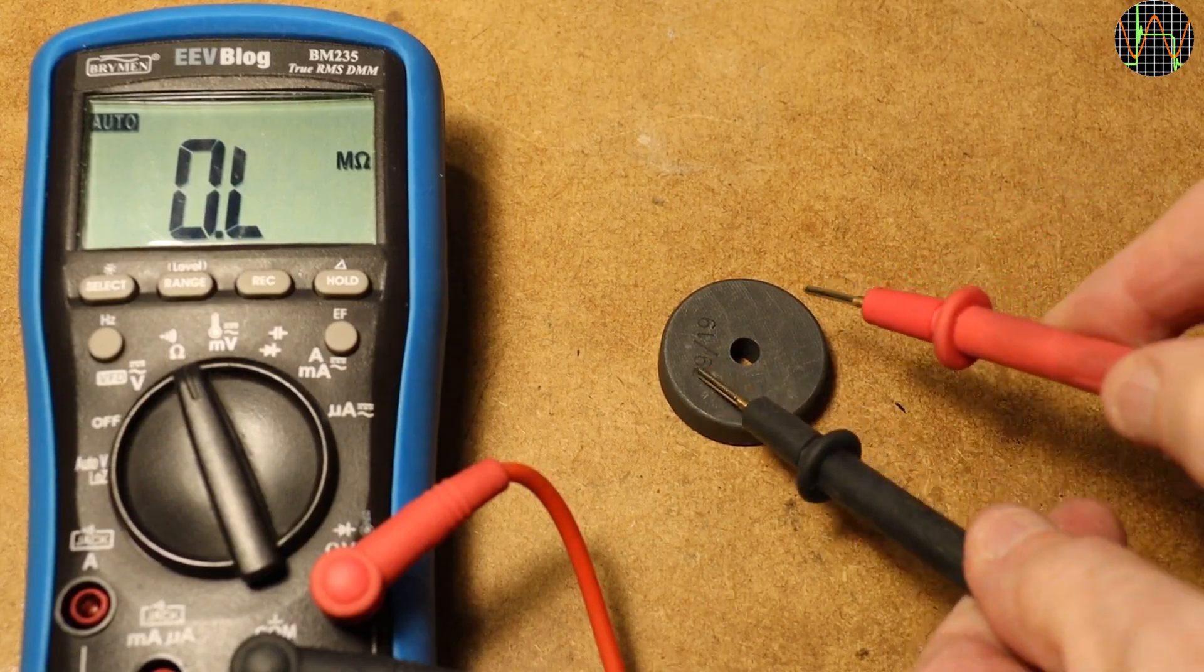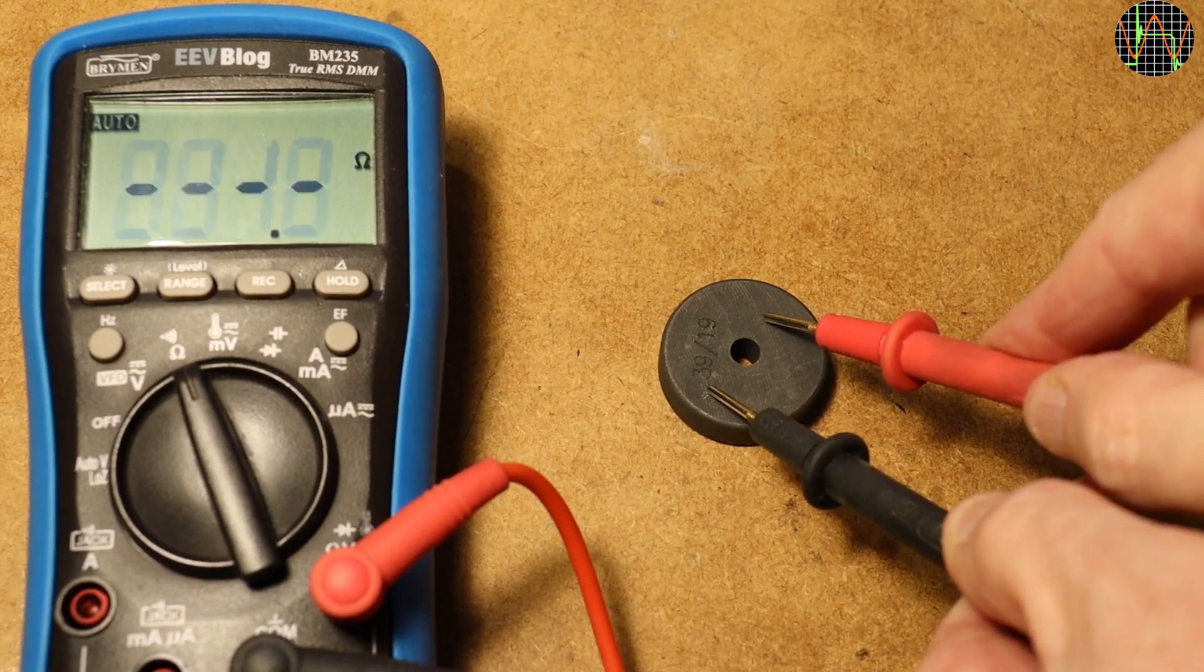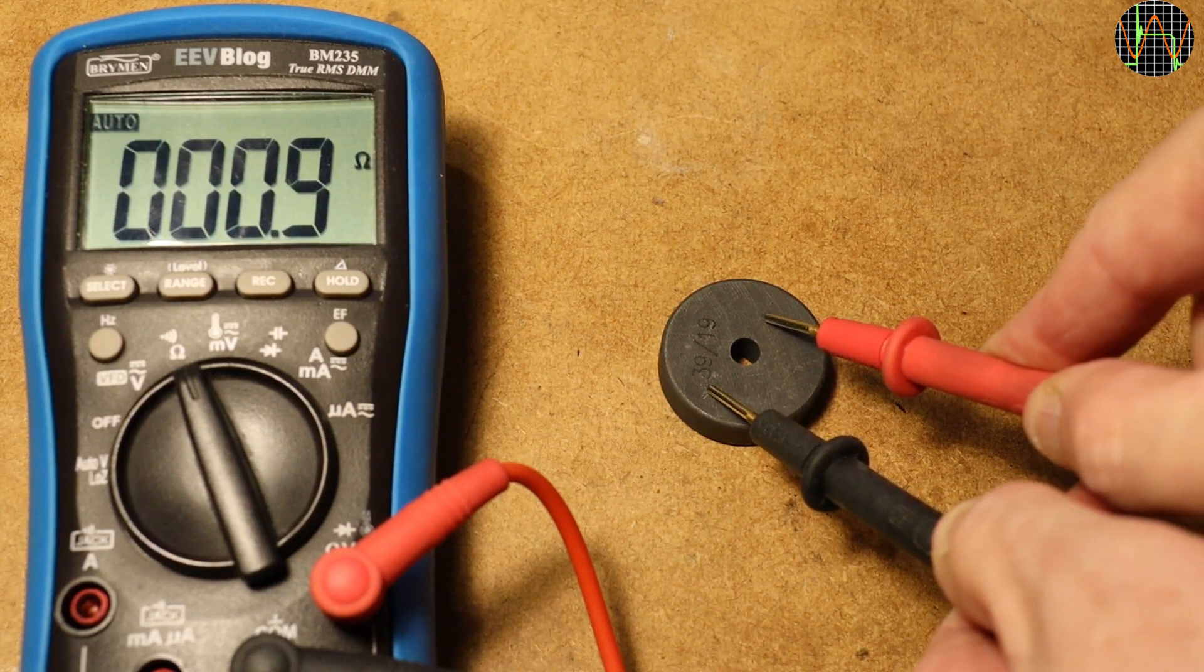I was curious what kind of resistance a wheel made of carbon has. Less than 1 Ohm, which is pretty reassuring.